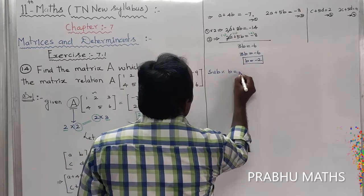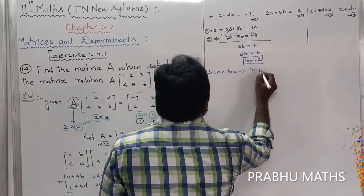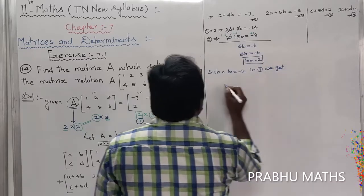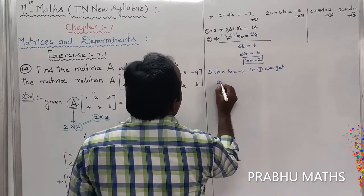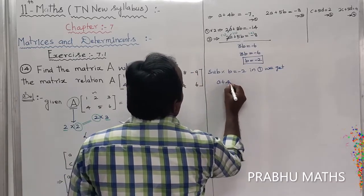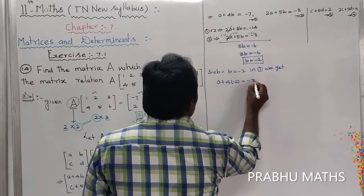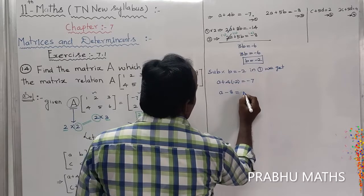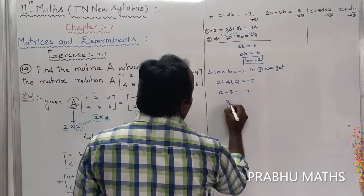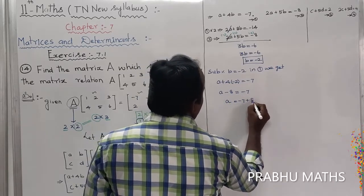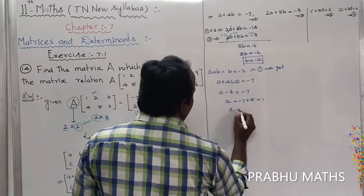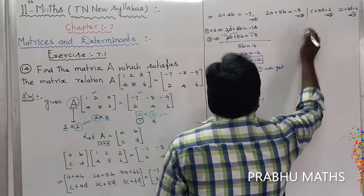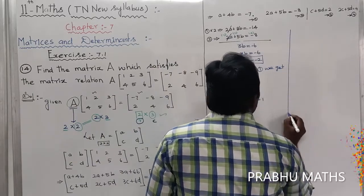Substituting B = -2 into equation 1: A + 4(-2) = -7, so A - 8 = -7, therefore A = 1. The value of A is now found.